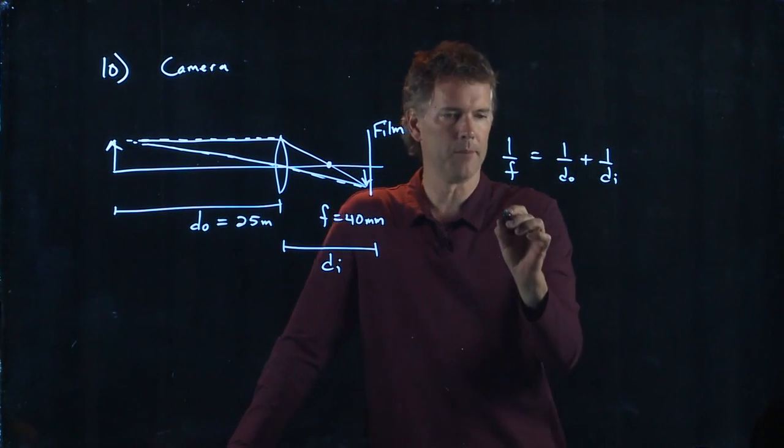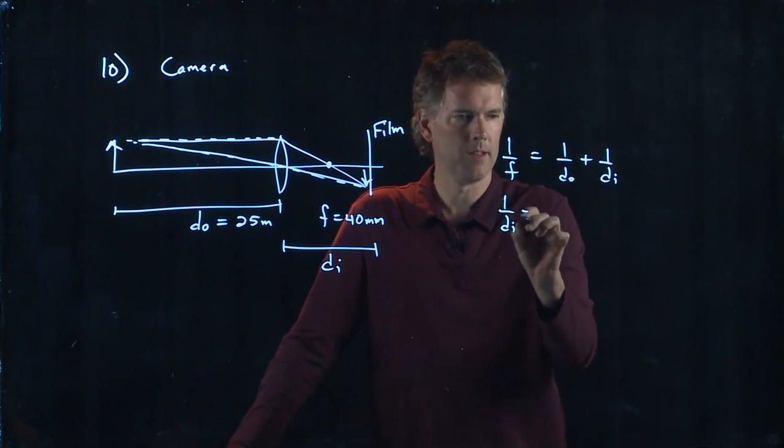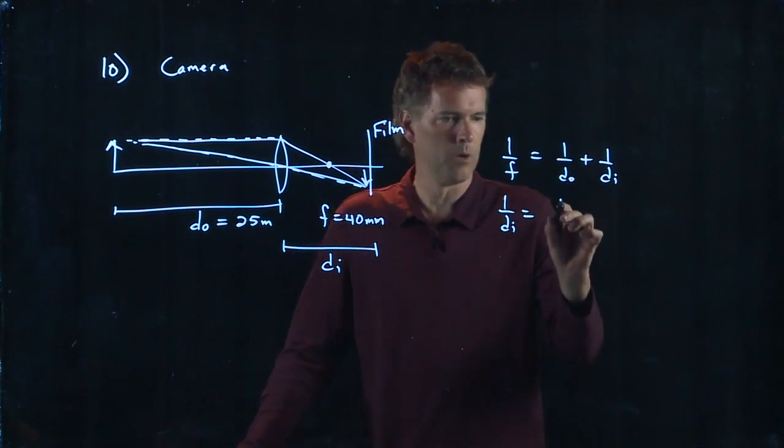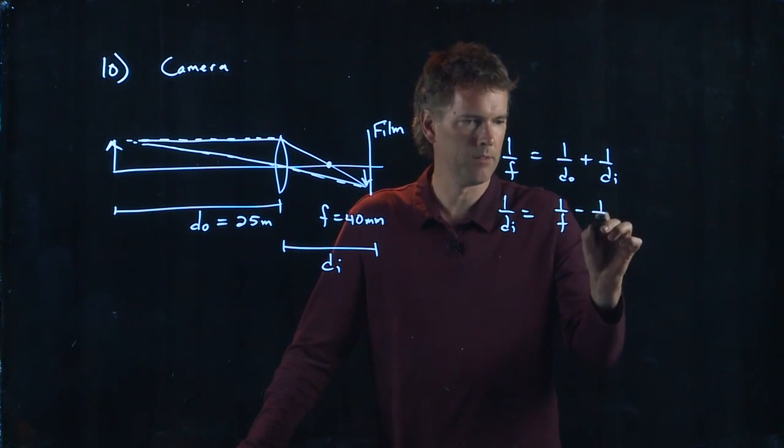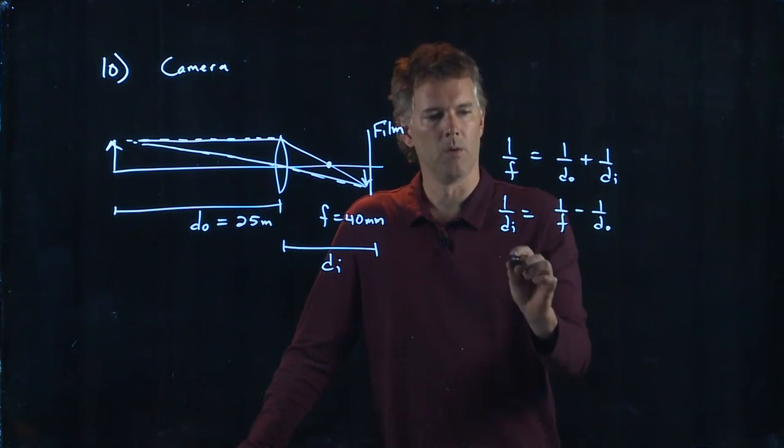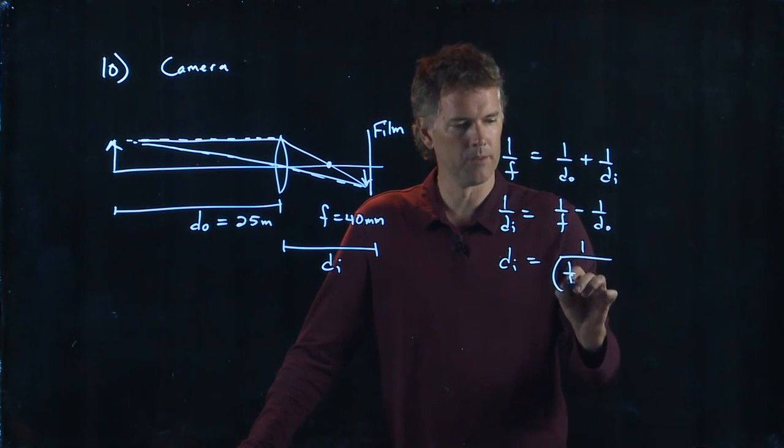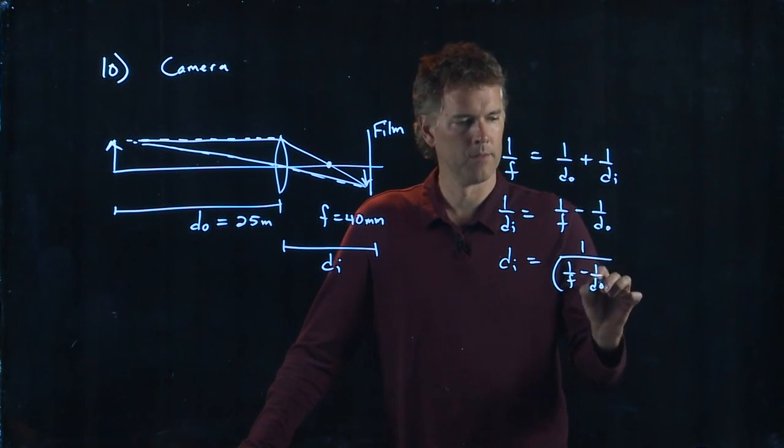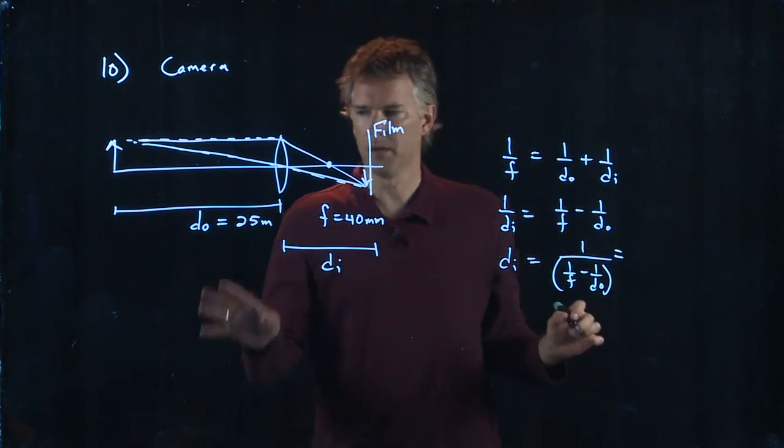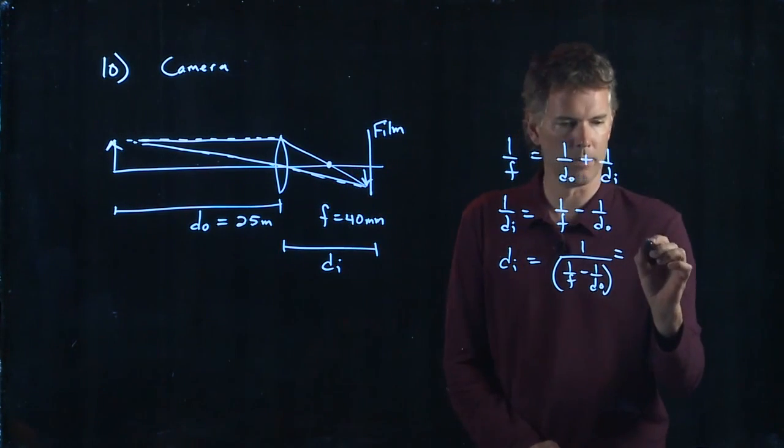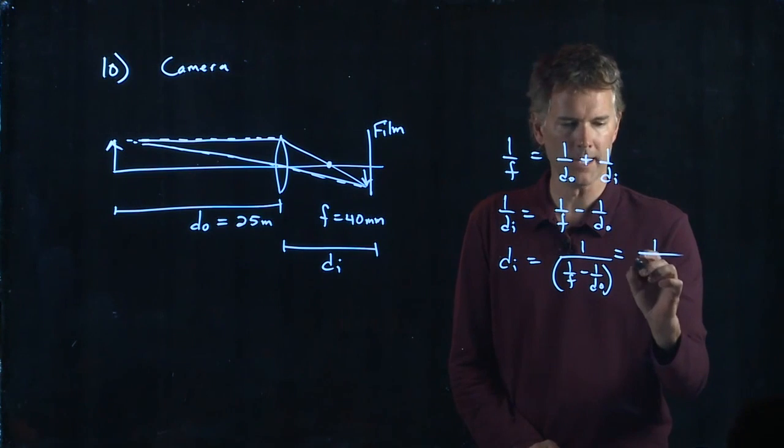Let's solve this for DI. We've got 1 over DI equals 1 over F minus 1 over DO or DI equals 1 over that whole thing. Somebody punch in your calculator what these numbers are and let's just calculate DI to start.